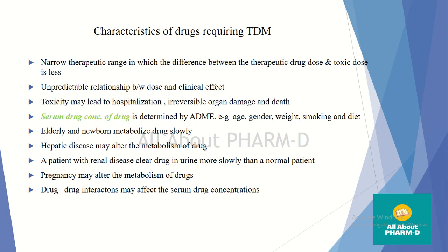The characteristics of drugs which require TDM include a narrow therapeutic range where there is an unpredictable relationship between dose and clinical effect. This means that even at a normal clinical dose, the drug may be toxic. This unpredictable relationship leads to toxicity, hospitalization, and organ damage. This concept is captured by monitoring serum drug concentrations.